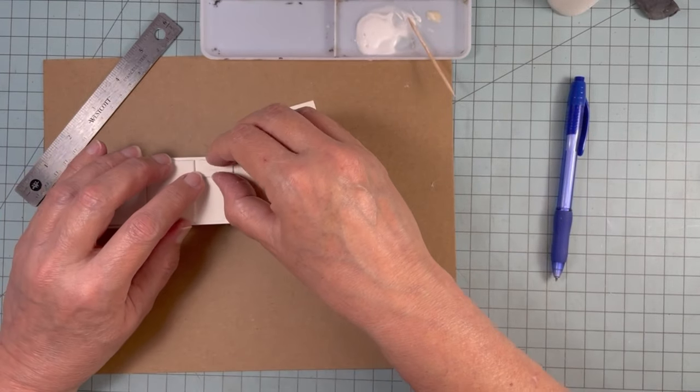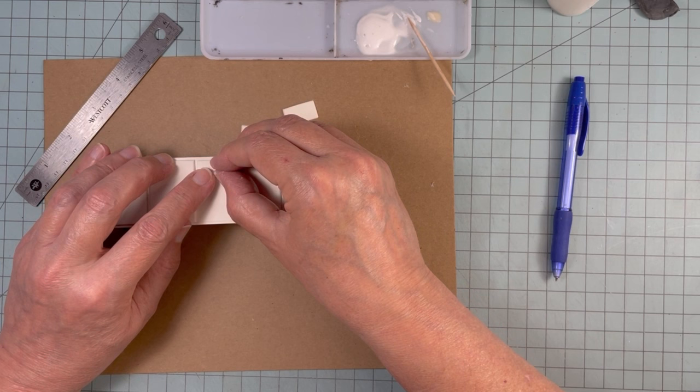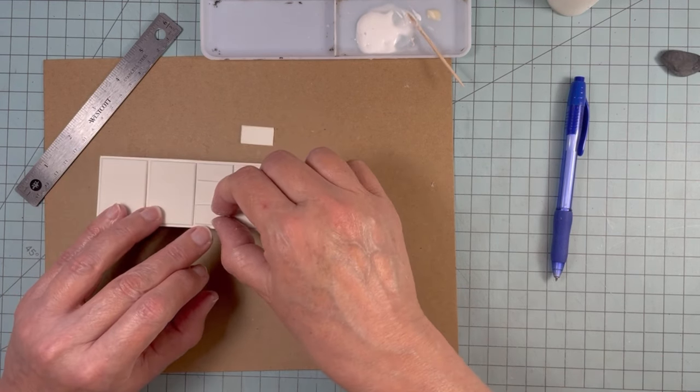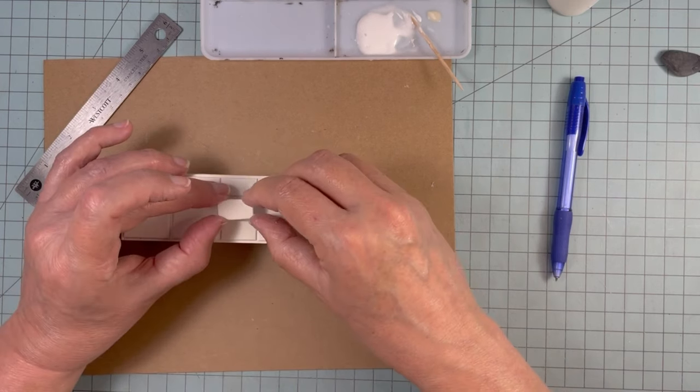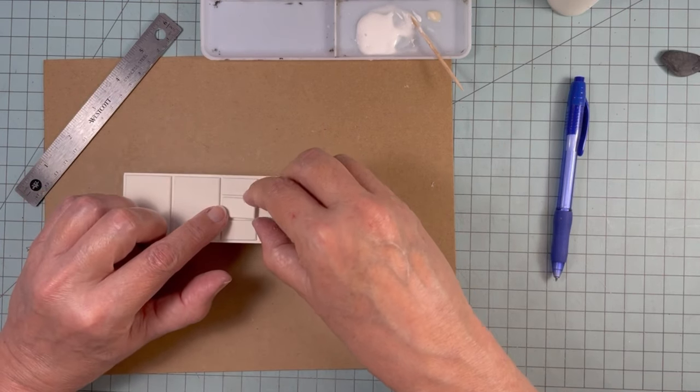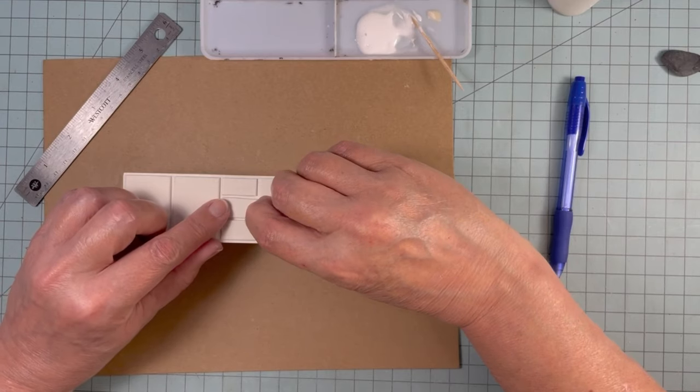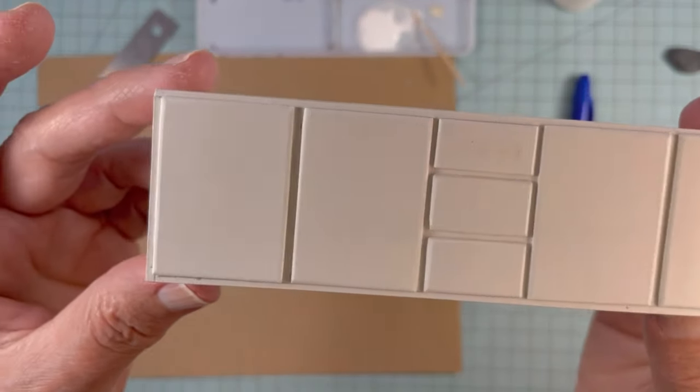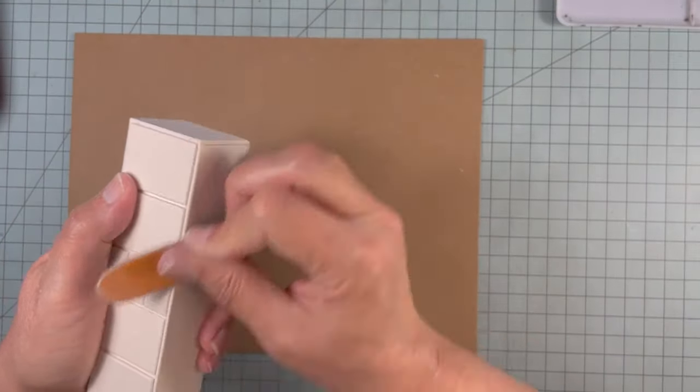Just need to add the drawers. And now the bottom half is almost complete. Just sanding all the hard edges.